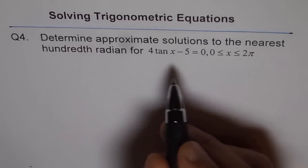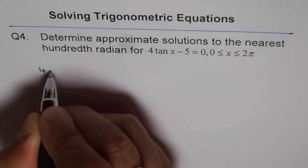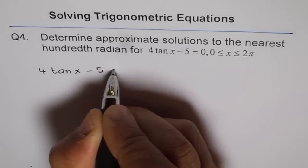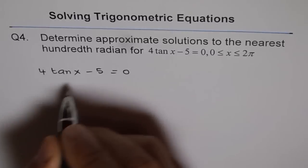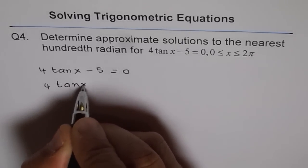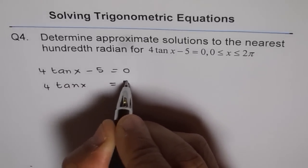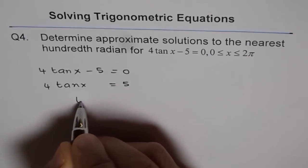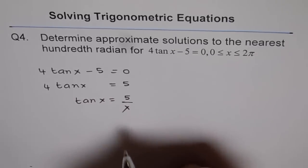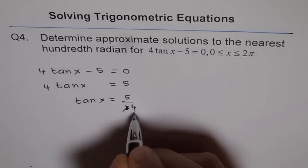Let's try to solve this equation. We have 4 tan x minus 5 equals 0. We can simplify this and say 4 tan x equals 5, or tan x equals 5 over 4.